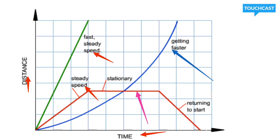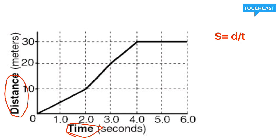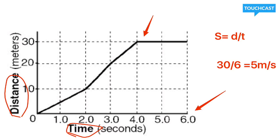Let's look at how we calculate average speed using a graph. The first step is to circle our units — it's distance versus time. If you wanted to find the average speed for the entire graph, you take the total distance the object traveled, which is 30 meters, and the total time, which was 6 seconds. Then you simply divide using the formula: speed equals distance divided by time. So 30 divided by 6 gives you 5 meters per second — that's the average speed.